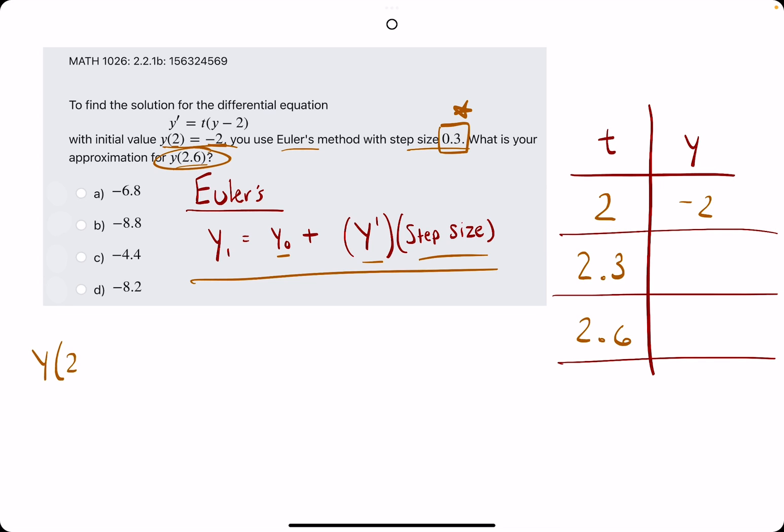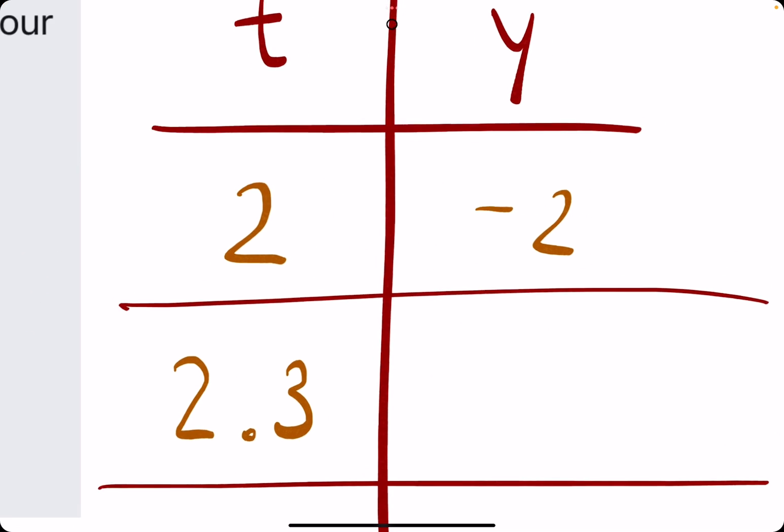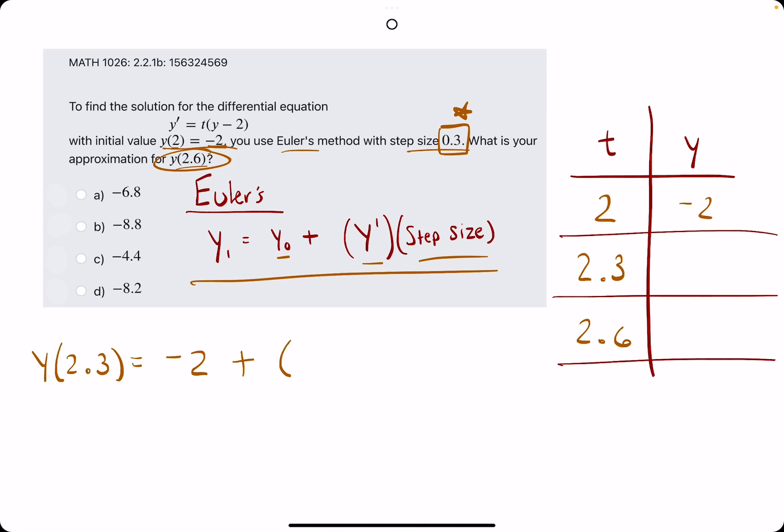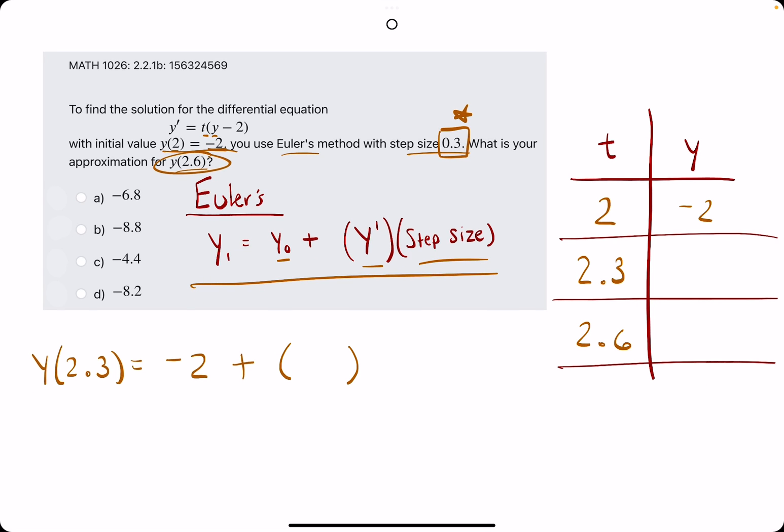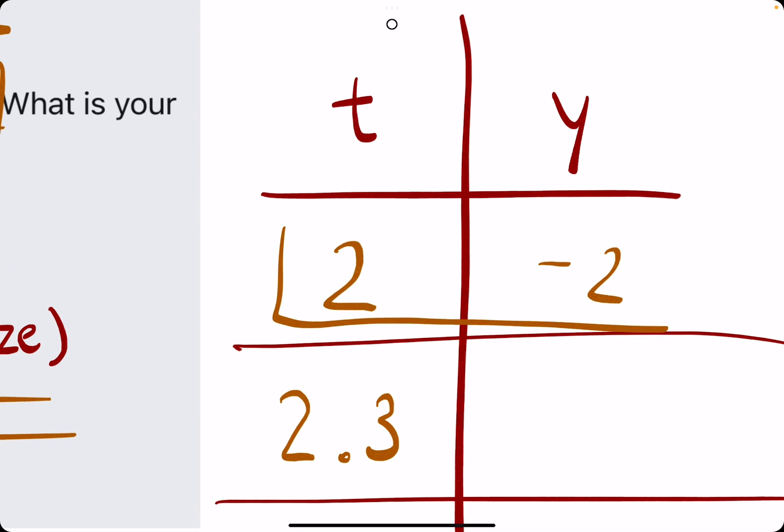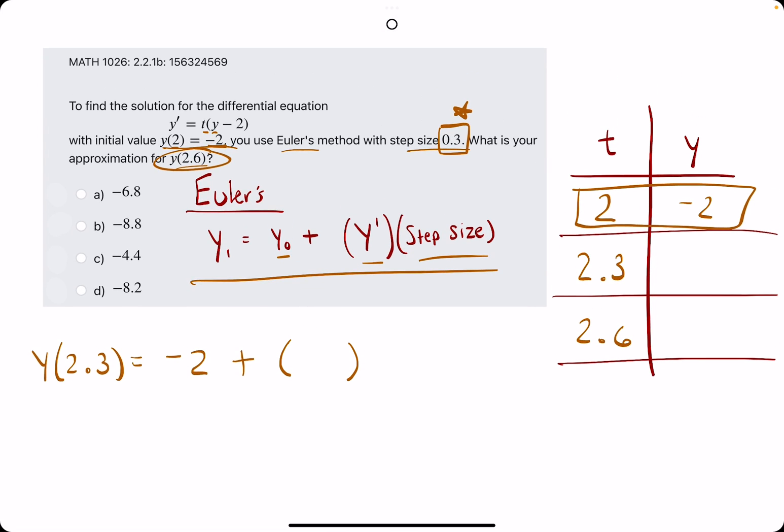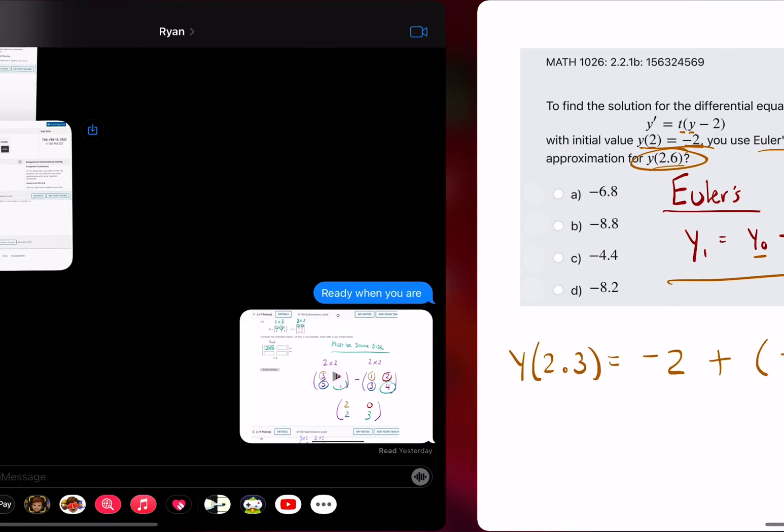Let's give it a shot. To approximate y at 2.3, we will use the previous y value, which was negative 2, plus we need a y prime value. For y prime, we need a t and a y, which means the only possible t and y values we could use would be the ones we have. So 2 is t, and y is negative 2. So y prime, we'll work this out to the side. We have t is 2 times y minus 2, so negative 2 minus 2, and we get 2 times negative 4, or negative 8 for y prime. So negative 8 is our y prime value, and then times the step size, 0.3.